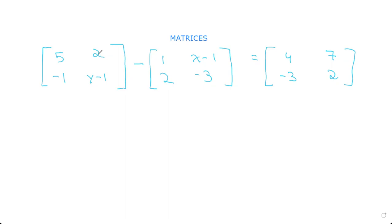So we first take the value in the top right position in both these matrices. So you go 2 minus x minus 1 equals the number in the top right position, which is 7. So you get 2 minus x plus 1 equals 7. You get minus x equals 4, so x will be equal to minus 4.